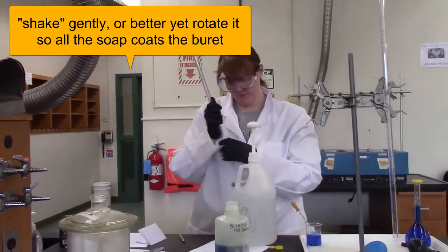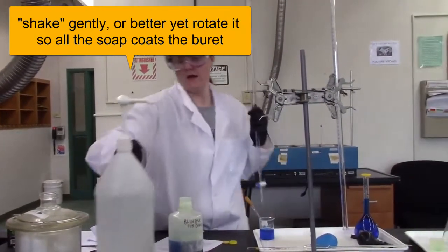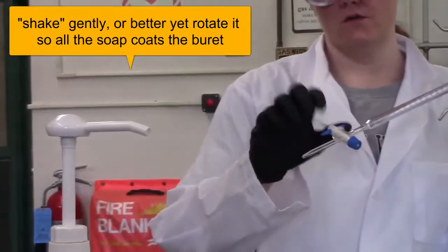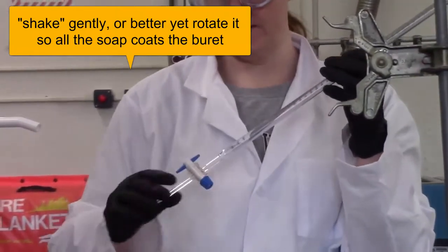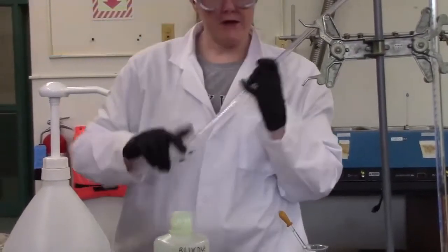The next thing you're going to do is rinse it with some distilled water. You're going to use your squirt bottle to do that. Making sure in all of your rinses that you open the valve and allow the liquid to rinse the valve and the end of your burette. So you're going to do a couple of rinses with distilled water to get the soap out.